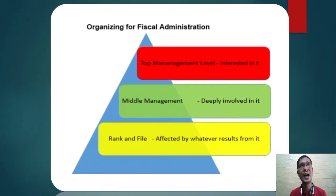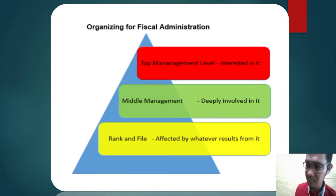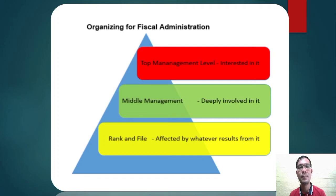So what are the management levels in fiscal administration? First, from the top, we have the top management level who are very interested in it. Second is the middle management who are deeply involved in it. And the last one is the rank and file who are affected by whatever results from it.